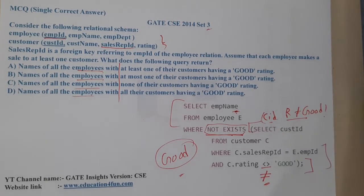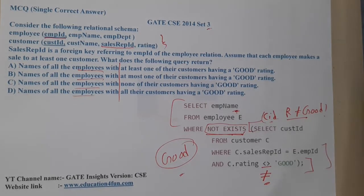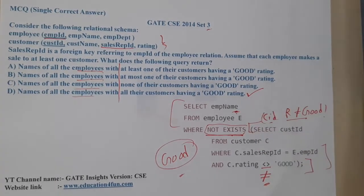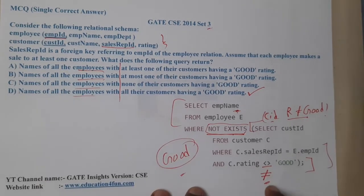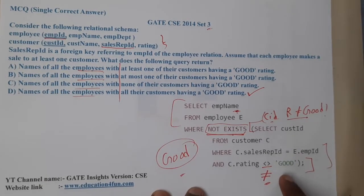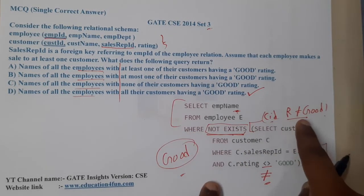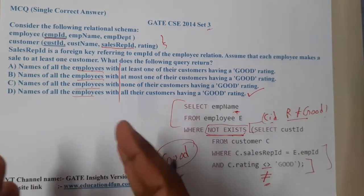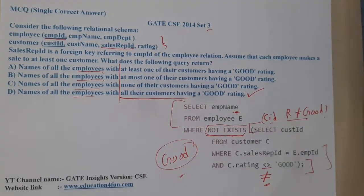Option A says at least one — no. Option B says at most one — no. Option D says name of all employees where ALL their customer reviews are good — yes, that is absolutely true. Because in the subquery we check where rating is not equal to good, so if at least one review is not good, that employee appears in the subquery. The opposite — none appearing there — means all their ratings are good.